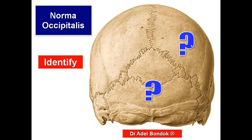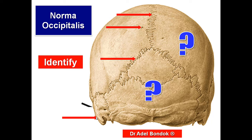This is the sagittal suture, this is the parietal foramen, and this is the lambdoid suture. This is the mastoid process and this is the mastoid foramen. The structures passing through the mastoid foramen are an artery and vein — the vein is an emissary vein between the occipital veins and the sagittal sinus, and the artery is the meningeal branch of the occipital artery supplying the dura of the posterior cranial fossa.